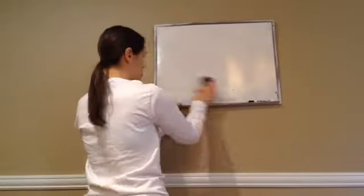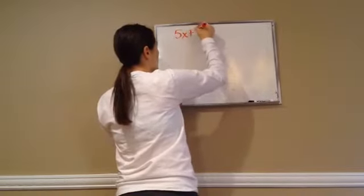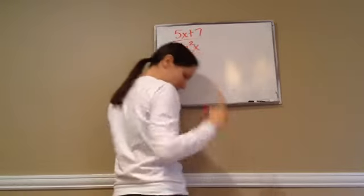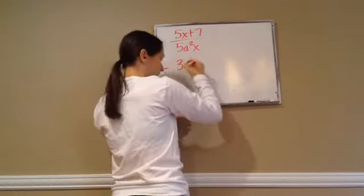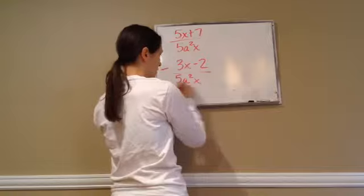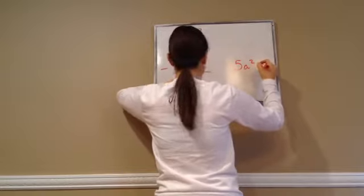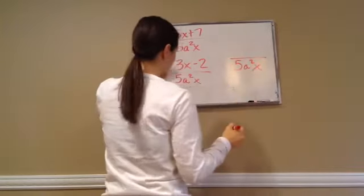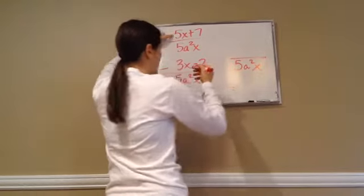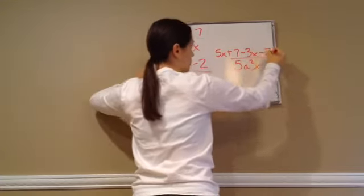Let's do a little bit harder one just to make sure you're getting it. 5x plus 7 over 5a squared x minus 3x minus 2 over 5a squared x. All right, what's the answer? Well our denominator, I'm going to write it over here, our denominator answer is 5a squared x. Again, that's easy because we want the same denominator. Now we just have to do the numerator. So I'm going to write down what it says: 5x plus 7 minus 3x minus 2.